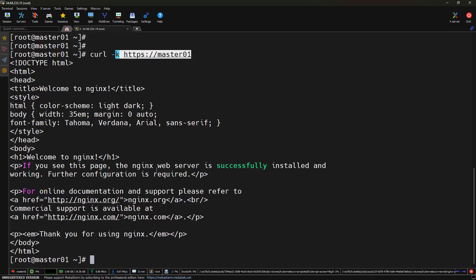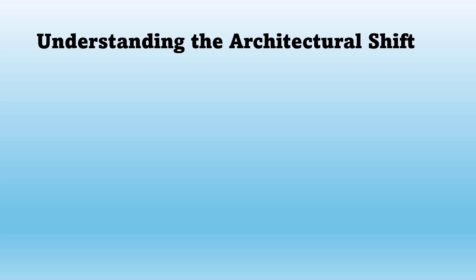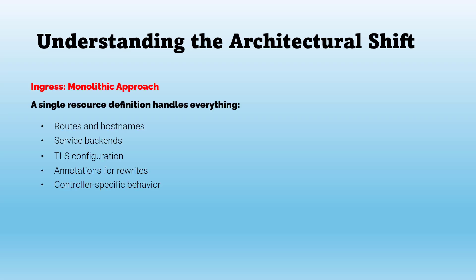Before we start the hands-on migration, I want you to clearly understand what is changing when we move from Ingress to Gateway API. On the left hand side we have a traditional ingress, which is a very monolithic object — a single YAML does everything: your routes, hostnames, backend services, TLS configuration, rewrite annotations, and lots of controller-specific behavior. The ingress becomes a big block of configuration, and the moment you add multiple apps or multiple teams, things get messy very quickly.